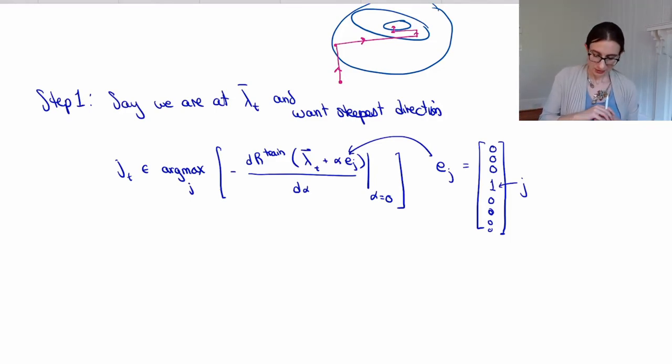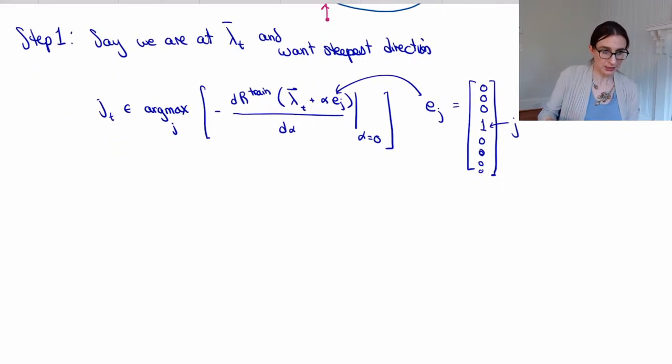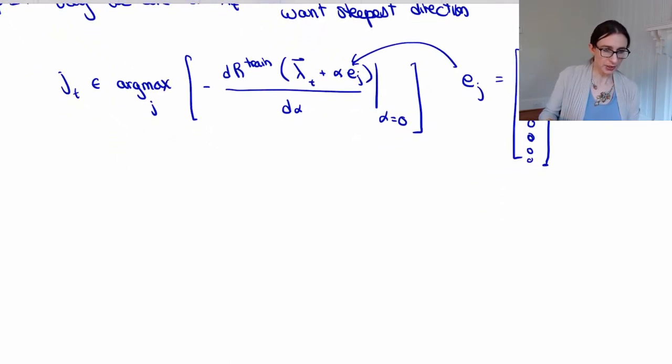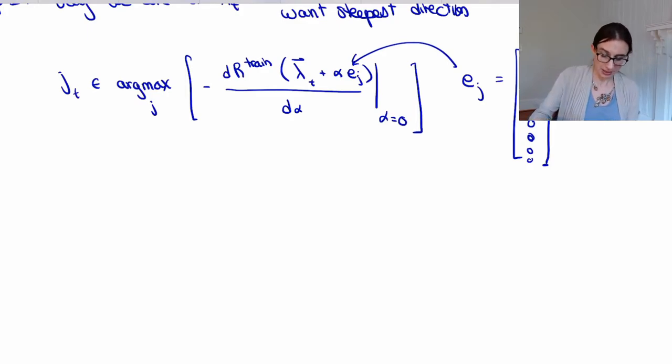So it's the j that maximizes the negative derivative. Why the negative derivative? Because we want to go down the function, not up the function. So it's the argmax of the negative, and then it's this directional derivative, these infinitesimal steps in each direction.